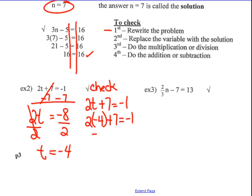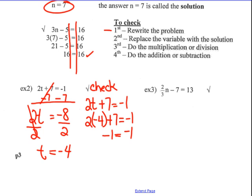2 times negative 4 is negative 8. Negative 8 plus 7 — does that equal negative 1? I can do that in my head: negative 8 plus 7, difference line, subtract, I get negative 1. Negative 1 equals negative 1. I've got the right answer — negative 4 must be the solution to this equation.